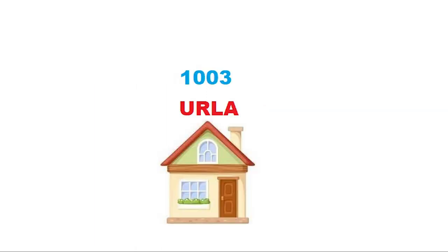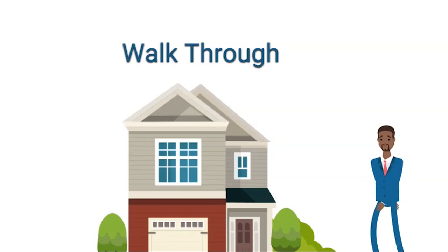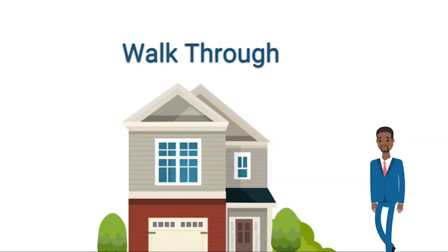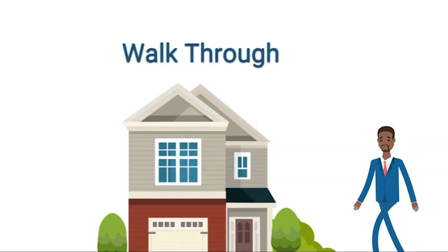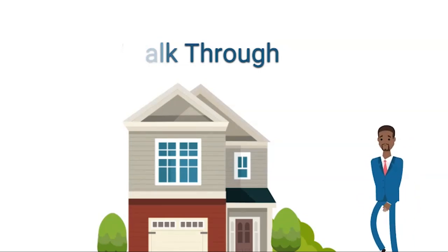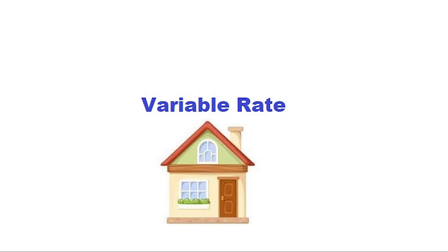Uniform Residential Loan Application, 1003 / URLA: the standard loan application form published by Fannie Mae and used by most lenders. Walk-Through: the second-to-final step in the home buying process that allows the buyer to inspect the property to verify that the building is in the same condition as when the offer to buy was made. Variable Rate: an interest rate type that may change depending on a rate index such as COFI or LIBOR.